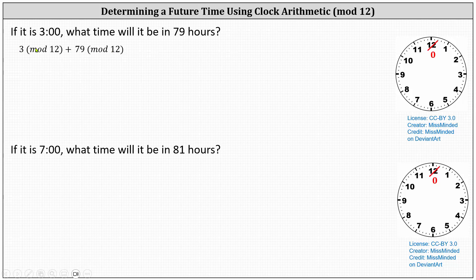Notice that three mod 12 does not simplify because three is less than 12. Now we have a choice: we can evaluate 79 mod 12 and then find the sum, or first find the sum and then evaluate it mod 12. Let's first evaluate 79 mod 12, which is equal to the remainder when 79 is divided by 12. 79 divided by 12 is equal to six with a remainder of seven, which indicates 79 mod 12 equals seven.